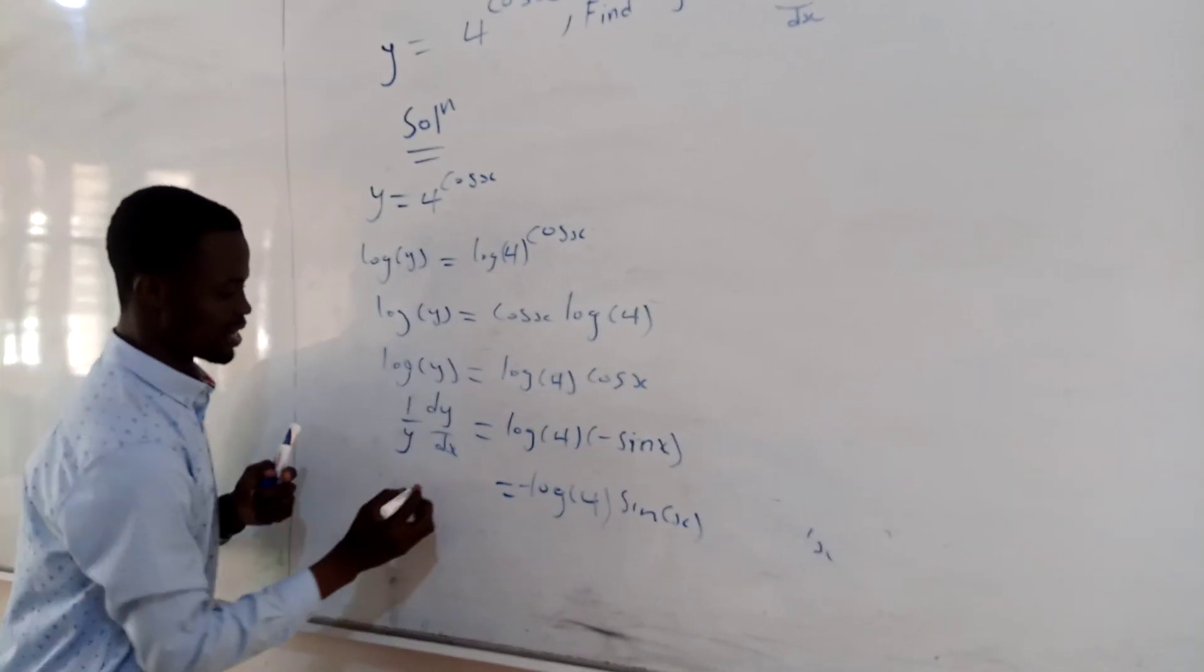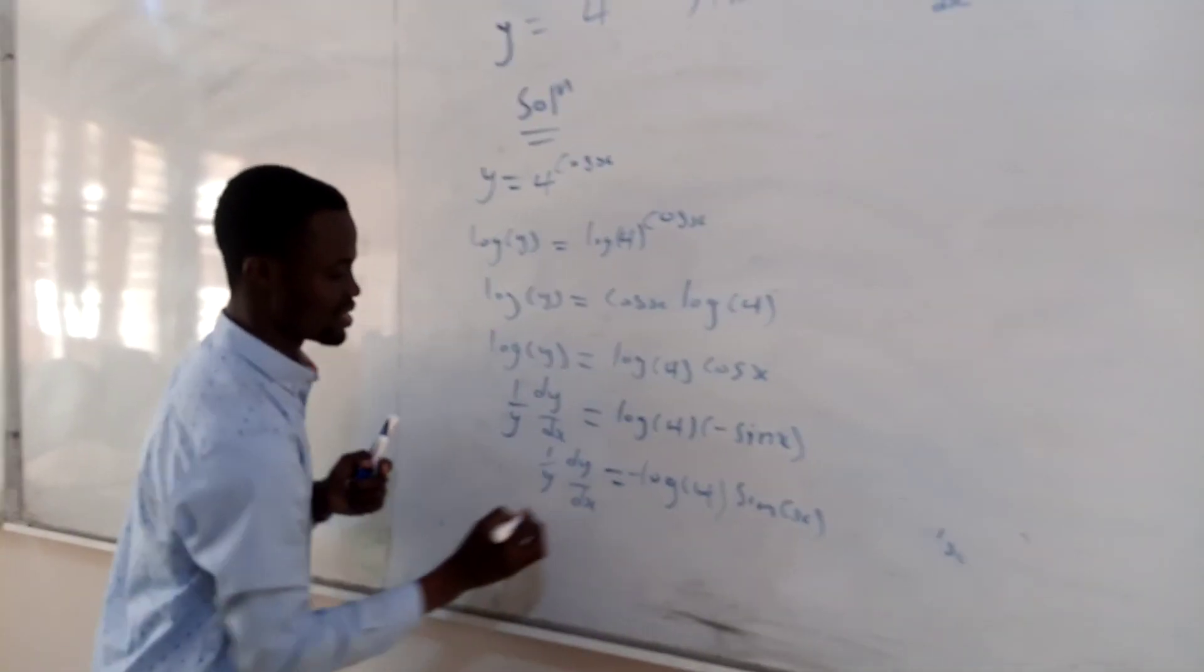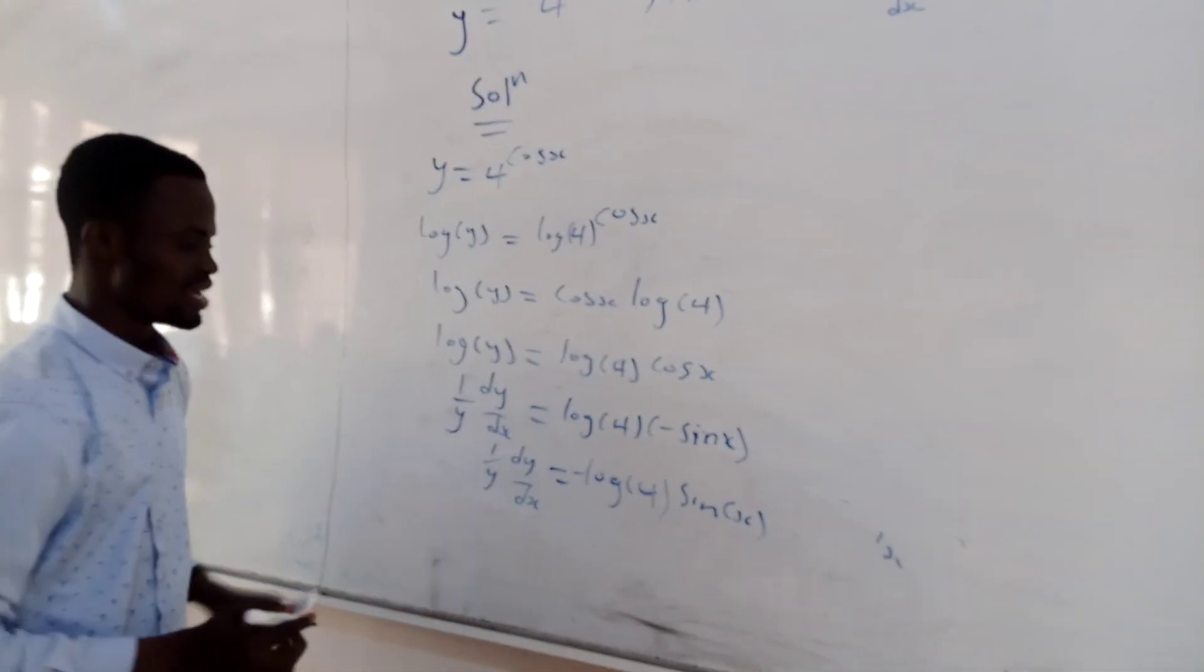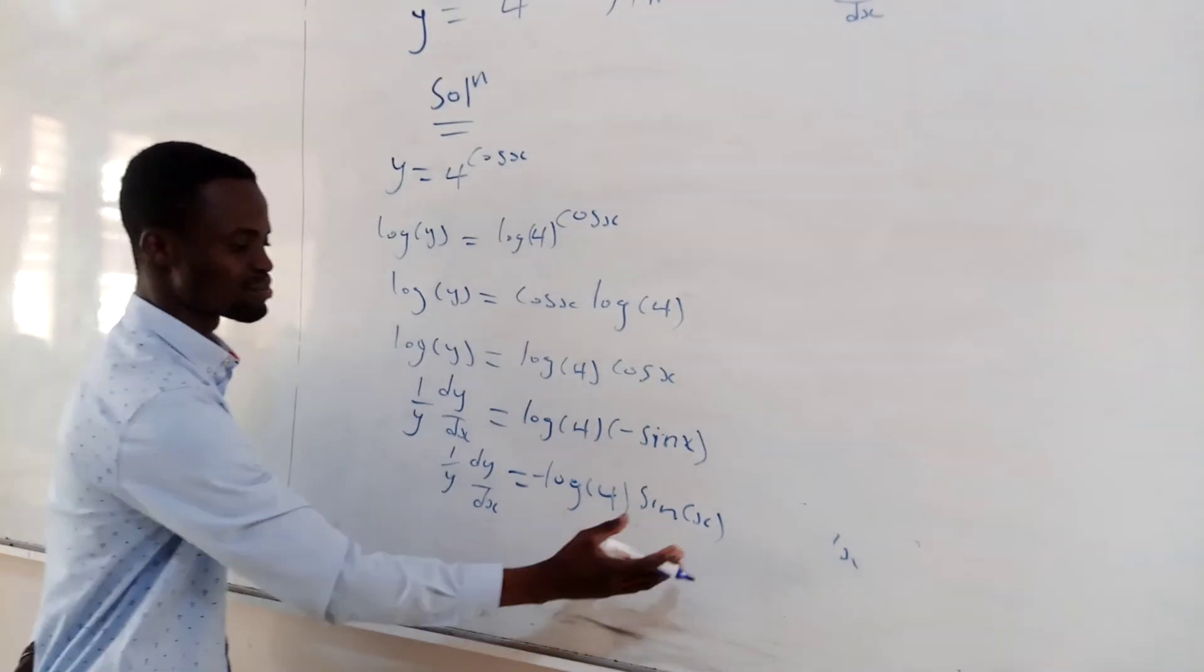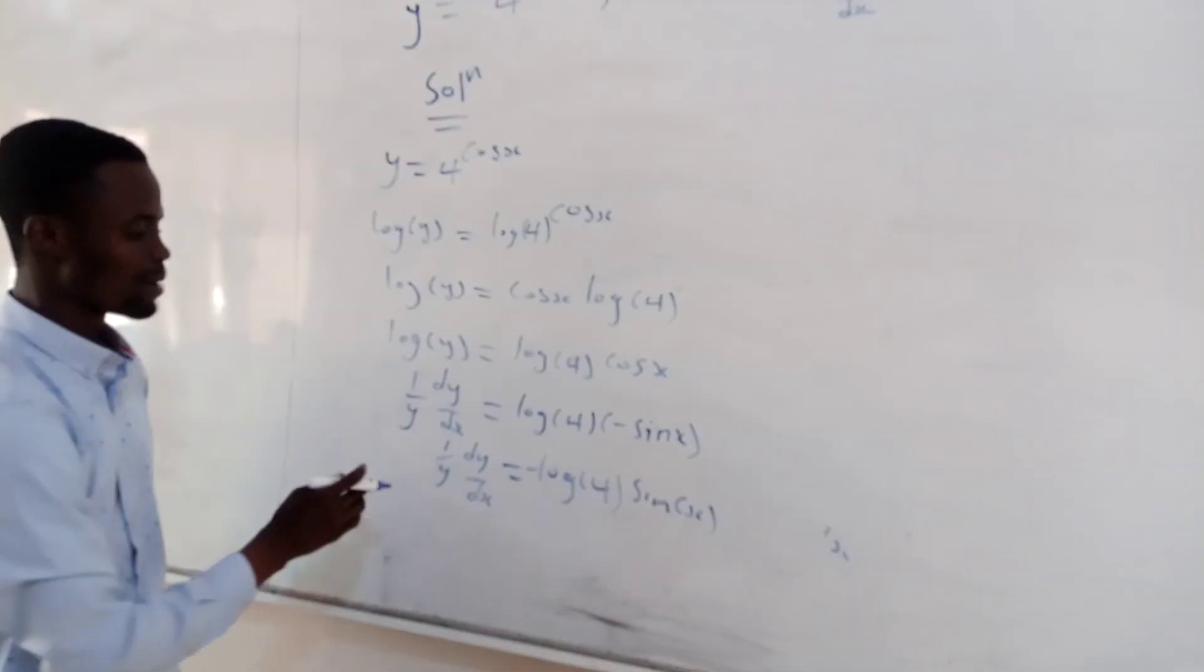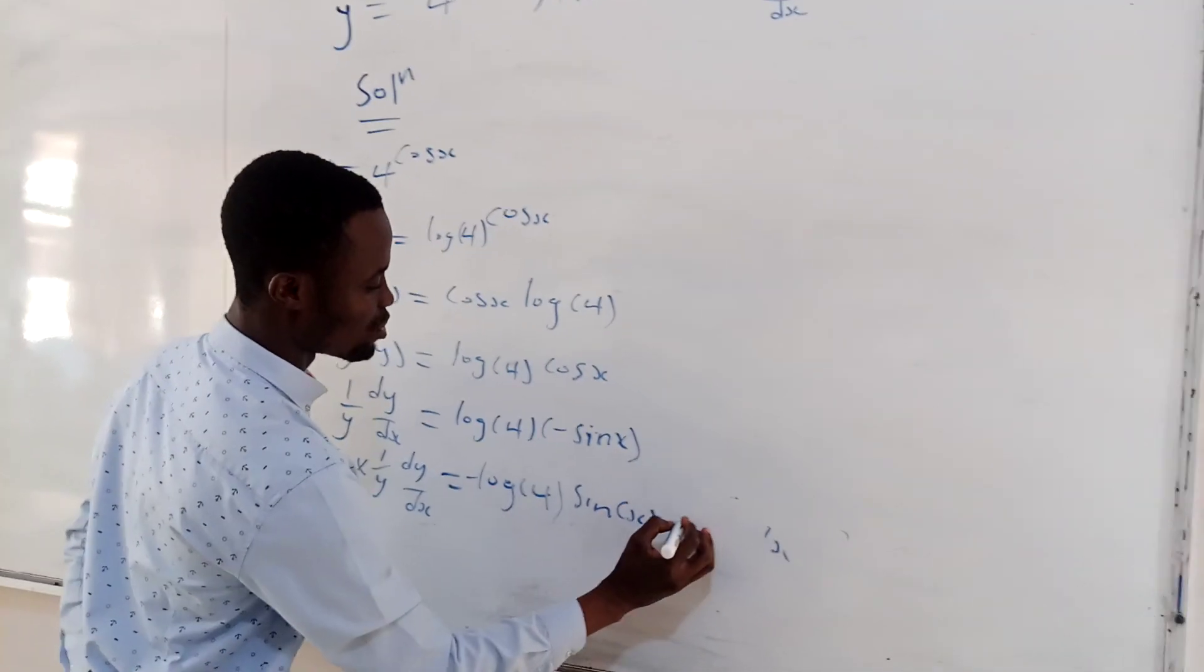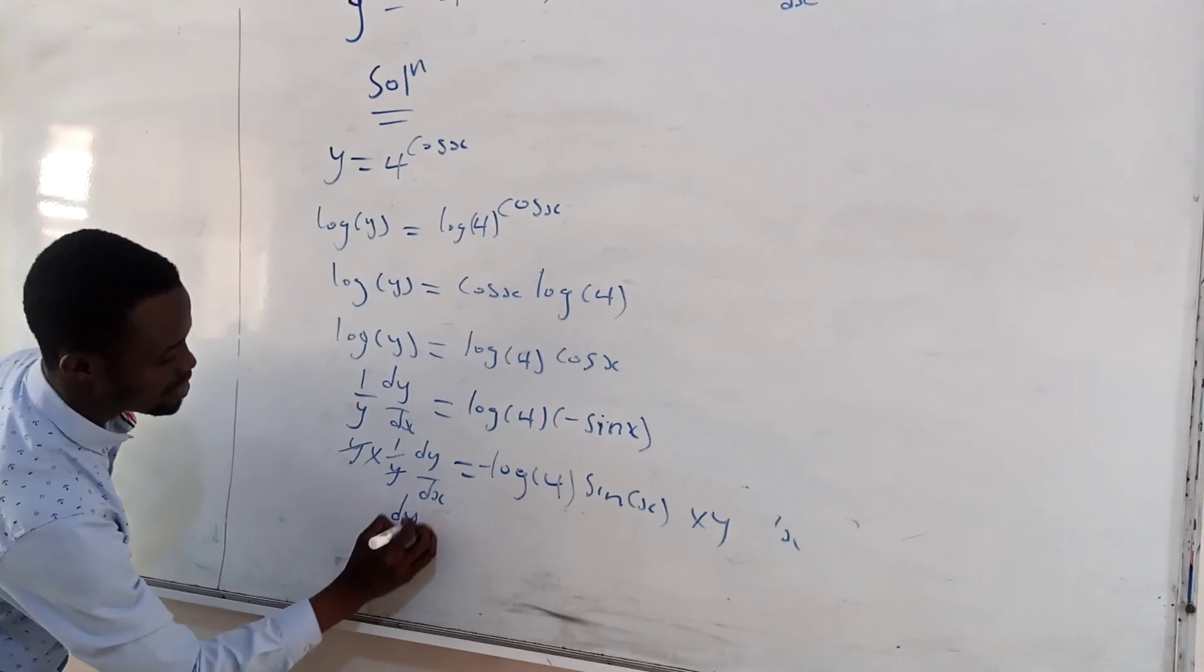Okay, so here, that's the same thing, dy dx. Then here, you try to make dy dx the subject from this side. If you do so, to make dy dx the subject from here, just multiply both sides by y. You multiply here by y, then you multiply here by y. If you do so, this one cancels, and you get dy dx.